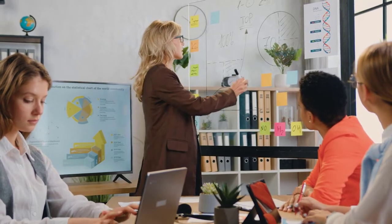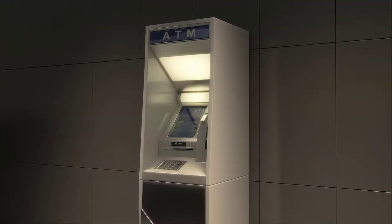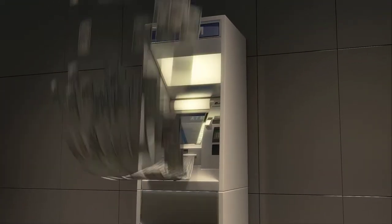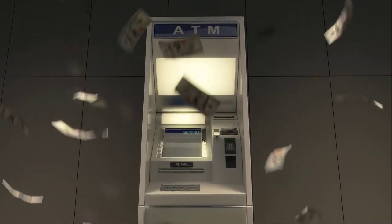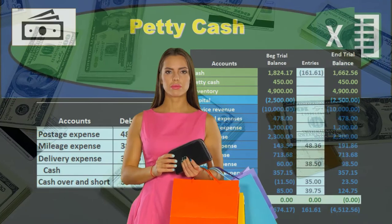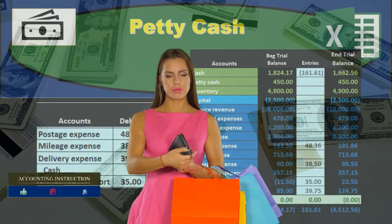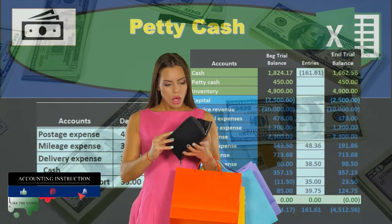The objective is to have an account separate from the checking account, where we need authorization to take money out. We would typically want anything going out of the checking account to be by electronic fund transfer or by check so that we have a clear paper trail. The petty cash, however, is for small items that are just convenient to pay with cash — that's what the petty cash fund is good for.